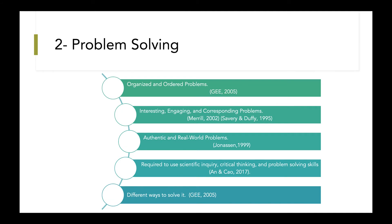The second important principle is problem solving. The problem space must be organized and ordered, which is why games must include levels from level 0, 1, 2, and so on. The problem must be authentic and a real-world problem, and it should be interesting for students. The game should allow players to solve problems in many different ways — there shouldn't be only one single way to solve the problem. Also, students should be able to solve their problem.